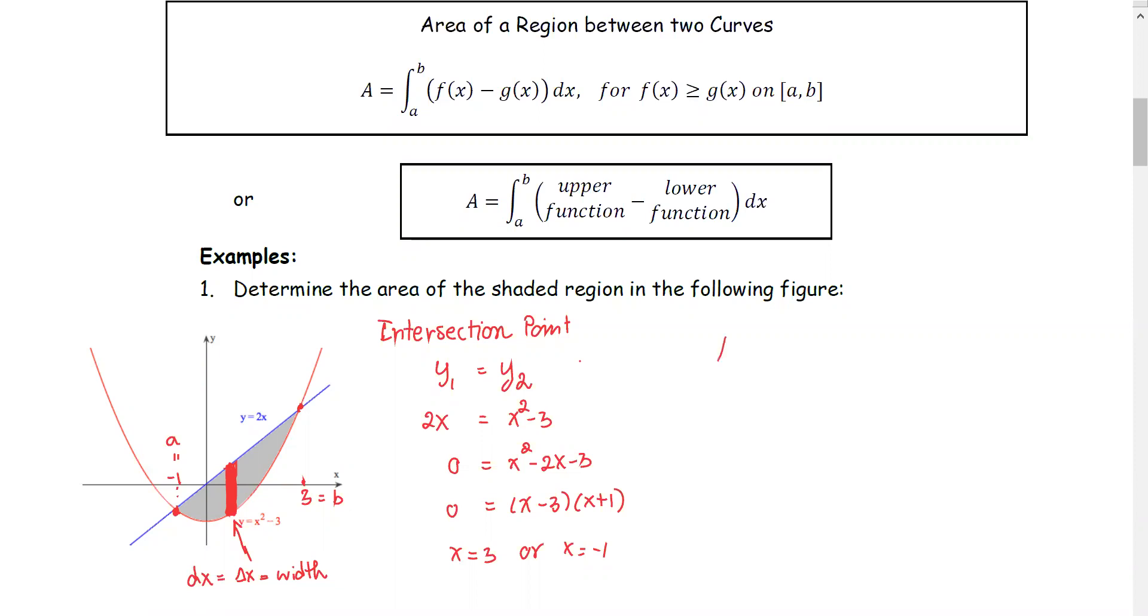To find the area A, set up the integration from lower limit negative 1 to upper limit 3. The upper graph, in this case, the upper graph is 2x. The lower graph is x squared minus 3, with respect to x.